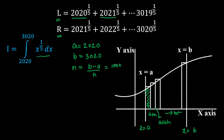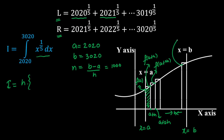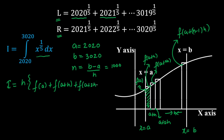So the number of strips is 1000. From the first principle, I can write the integral as h multiplied by the sum: f(a) + f(a+h) + f(a+2h) + ... + f(a + (n-1)h). I am taking the lower sum here, so the last term is f(a + (n-1)h).